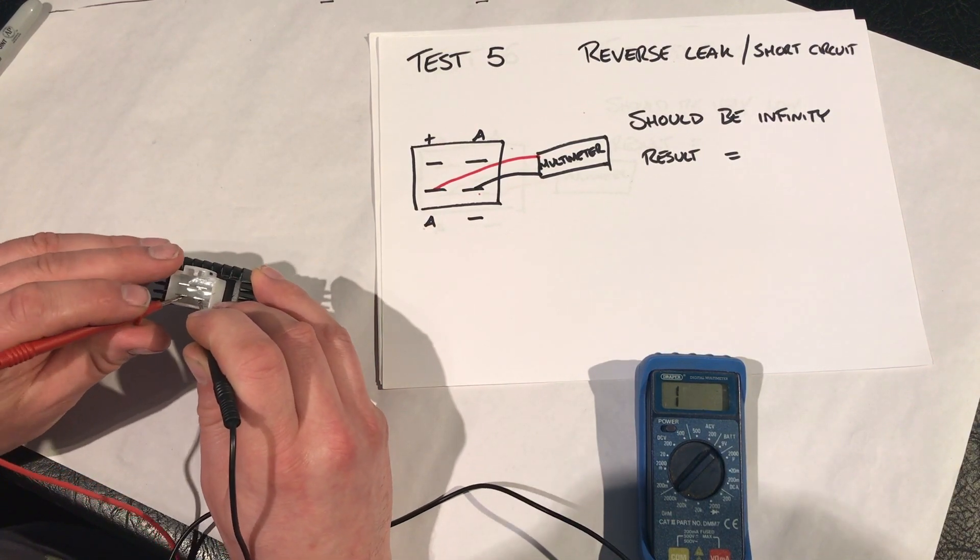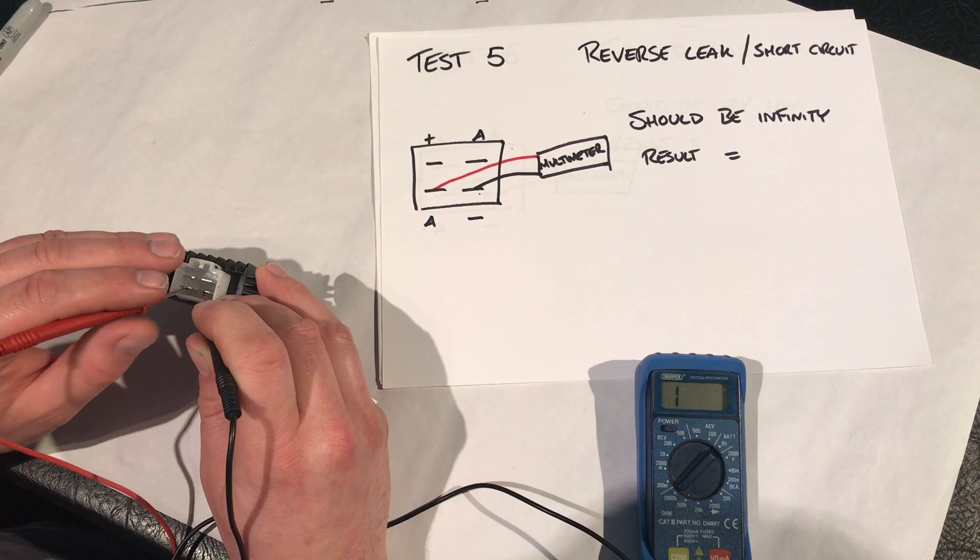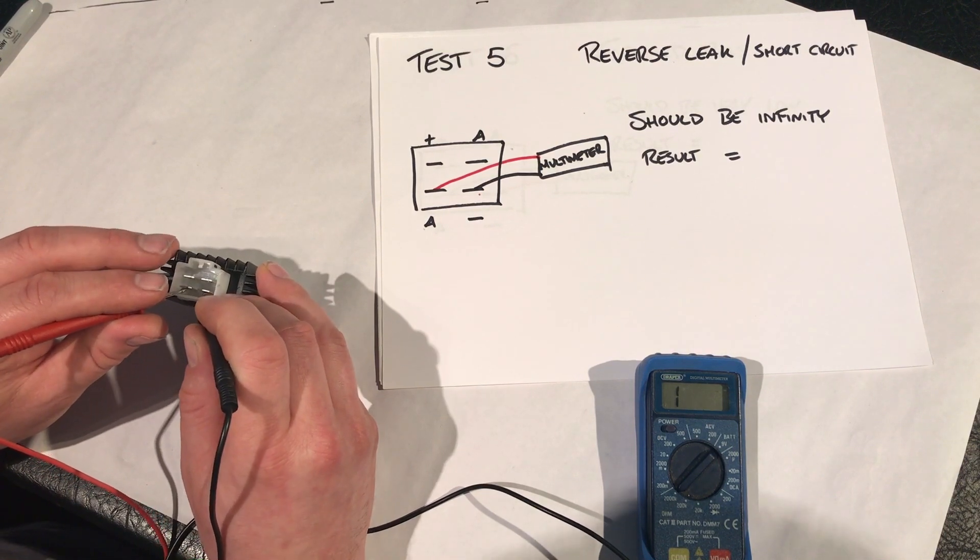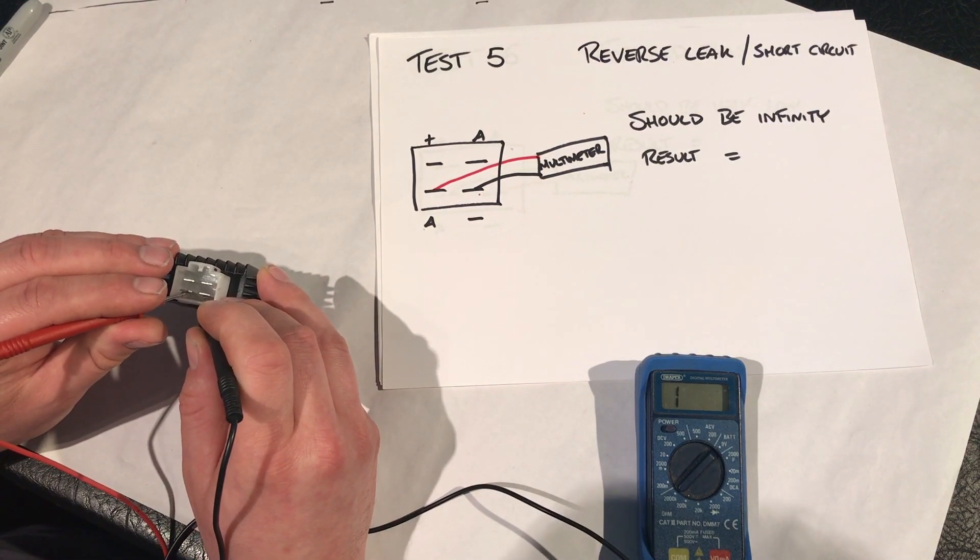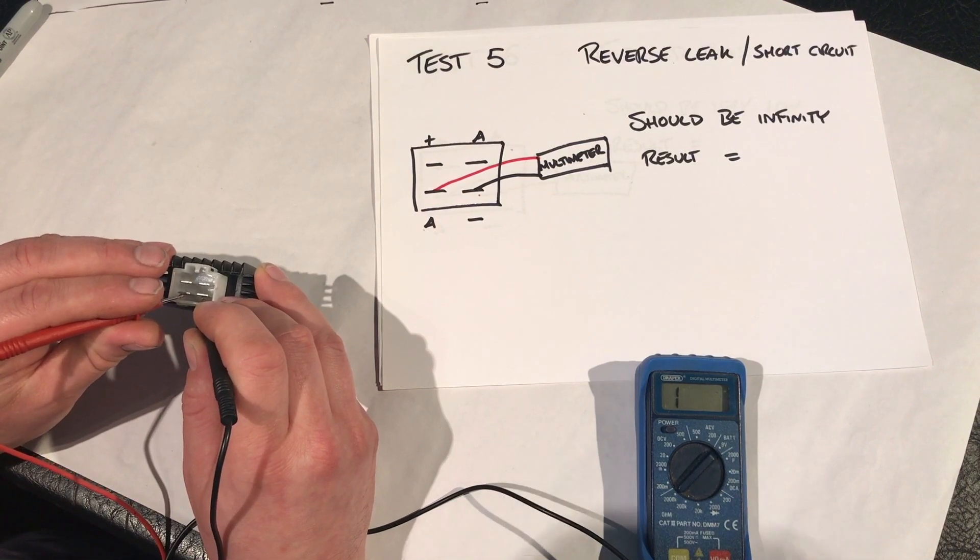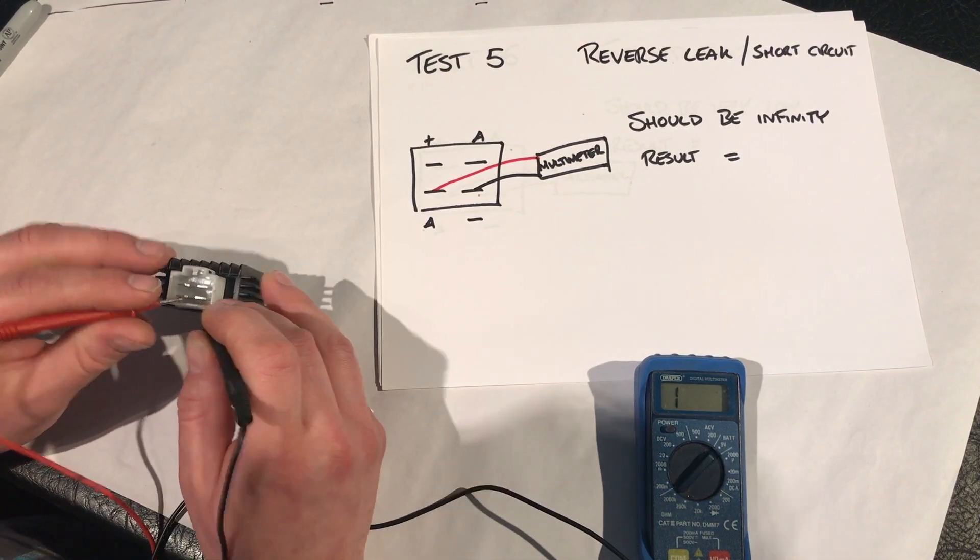So test five, reverse leak again. So we're seeing if the diode is sending power backwards the wrong way. And as you can see, we're showing infinity. So we've got no issues there. It's not pushing power backwards through it. So this one's a pass.